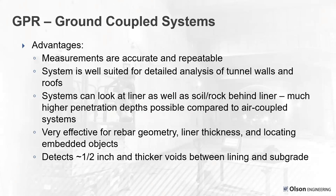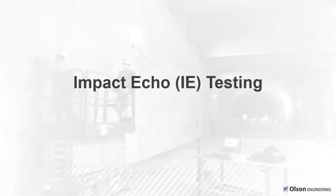Some advantages of GPR: it's very accurate and repeatable, good for walls and roofs, and can look at both the liner and the soil and rock behind it. Ground-coupled has much higher penetration depth than air-coupled — with low frequency antennas, we can sometimes see 6, 8, or 10 feet back into the soil and rock, depending on material properties. It can also be used for rebar geometry, liner thickness, and embedded objects. Note that it won't be very effective at finding very thin voids — typically half inch or thicker, depending on depth.